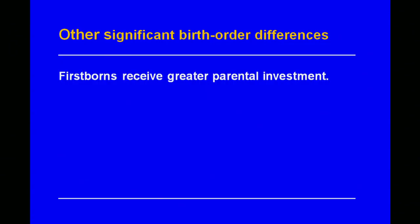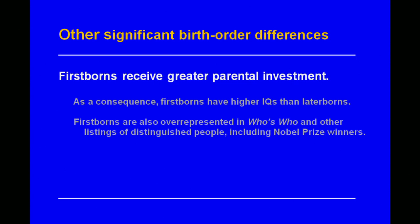Other significant birth order differences stem from firstborns tending to get more parental investment. As a consequence, firstborns have higher IQs than laterborns. A study involving virtually every child ever born in Norway found that firstborns had about three more IQ points than their younger siblings. Firstborns are also over-represented in most measures of eliteness — they win more Nobel Prizes than their younger siblings, but not the Nobel Peace Prize. Younger siblings are over-represented in that category.